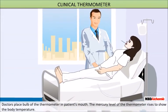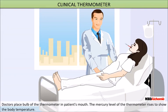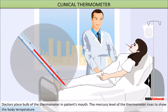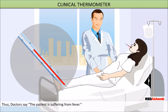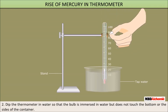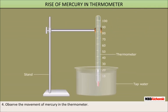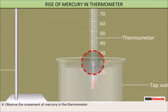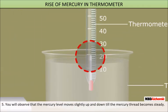Doctors place the bulb of the thermometer in a patient's mouth; the mercury level rises to show the body temperature — thus doctors say the patient is suffering from fever. To practice reading, take some tap water in a beaker, dip the thermometer so that the bulb is immersed in water but does not touch the bottom or the sides of the container, and hold the thermometer vertically.